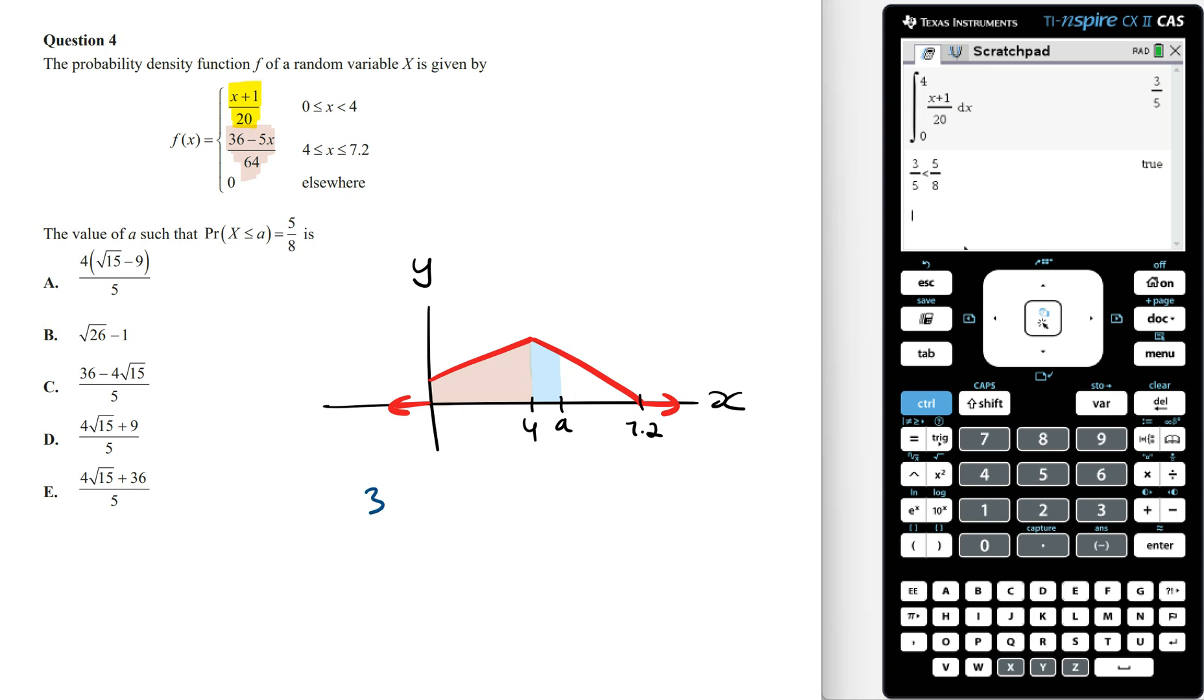From here we can say that 3 on 5 plus the area under the graph of f of x from 4 to a, which we can write as the integral from 4 to a of the rule 36 minus 5x over 64 dx, has to equal 5 on 8.